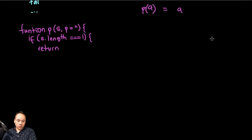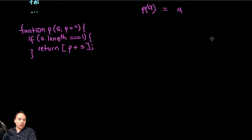What we're going to return is an array. We need the prefix later, so we are going to return the prefix plus the string. That's the base case.